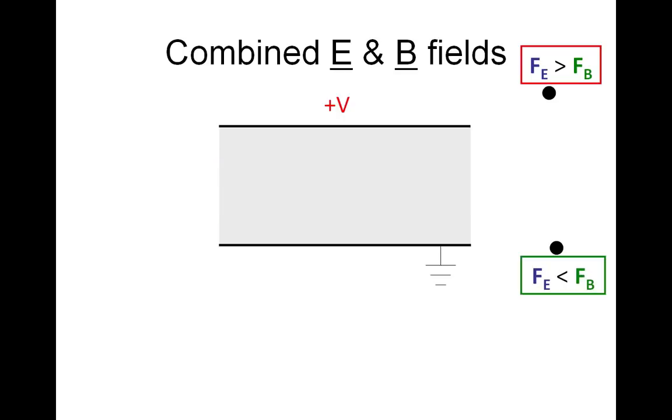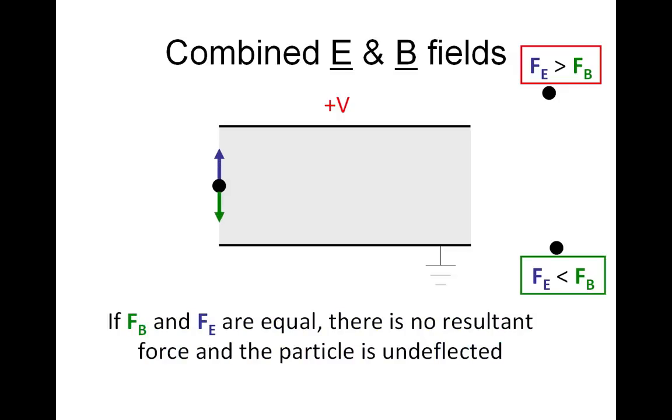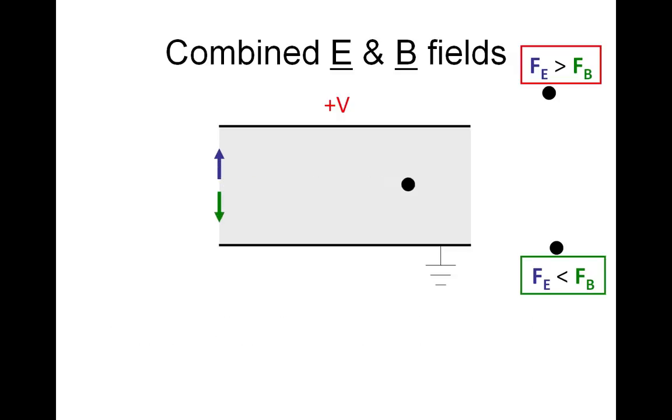The final possibility is with our negative particle, we have the electric force and the magnetic force equal and opposite to each other. In this case there's no resultant force, so the particle is undeflected and carries straight on through.